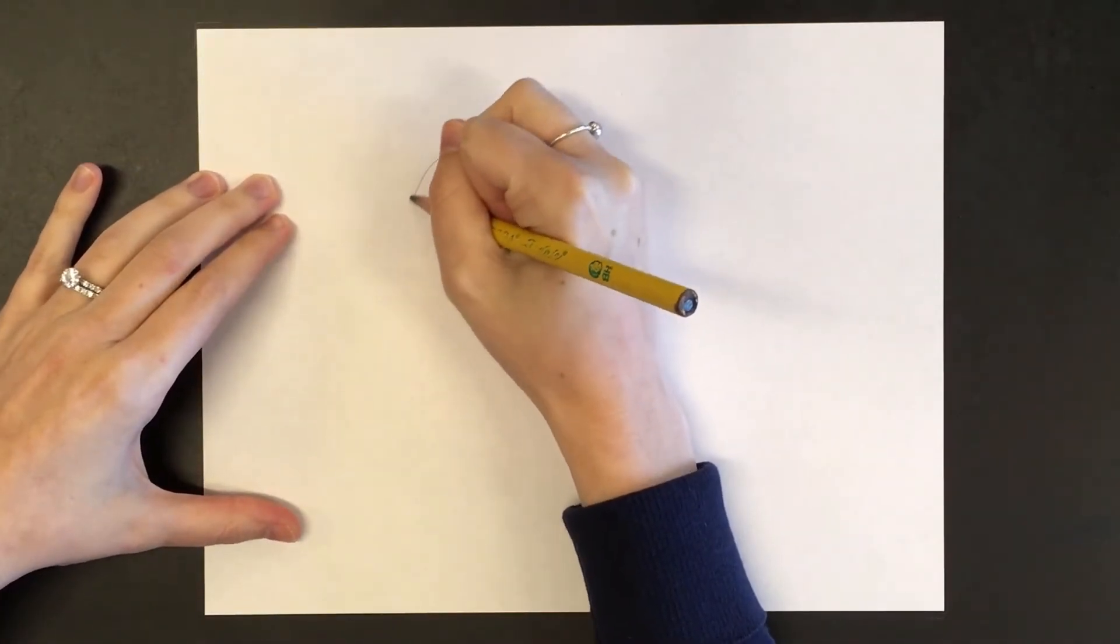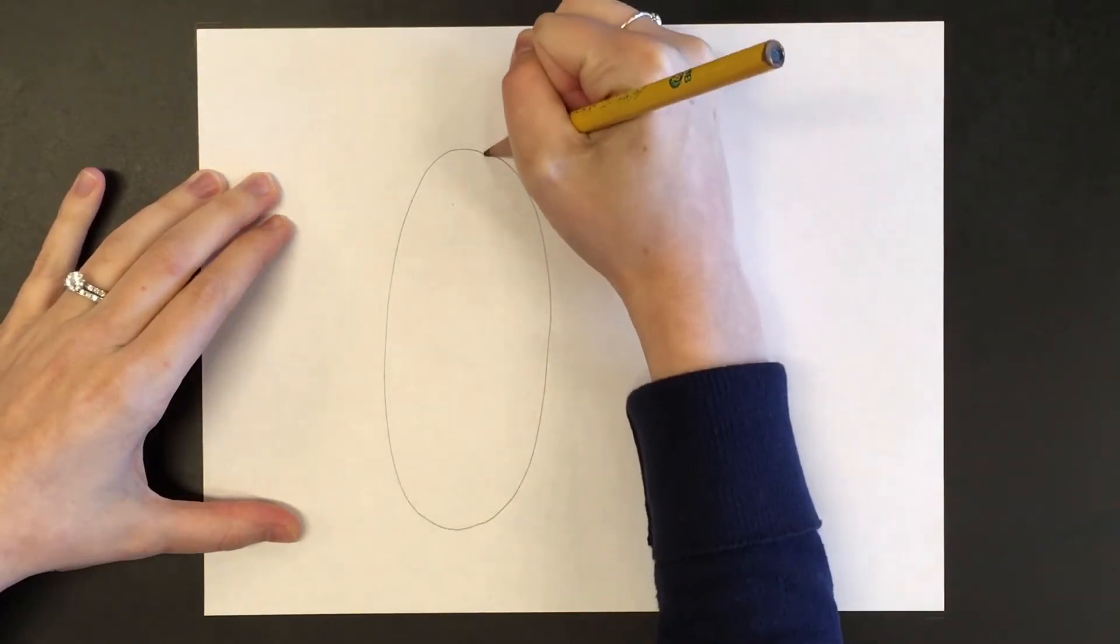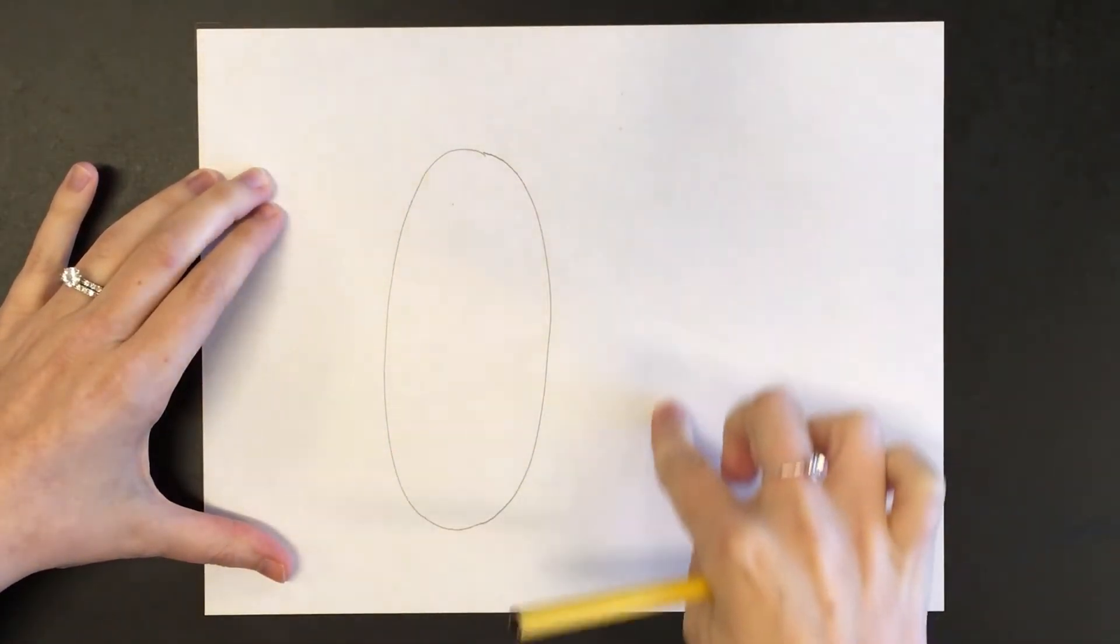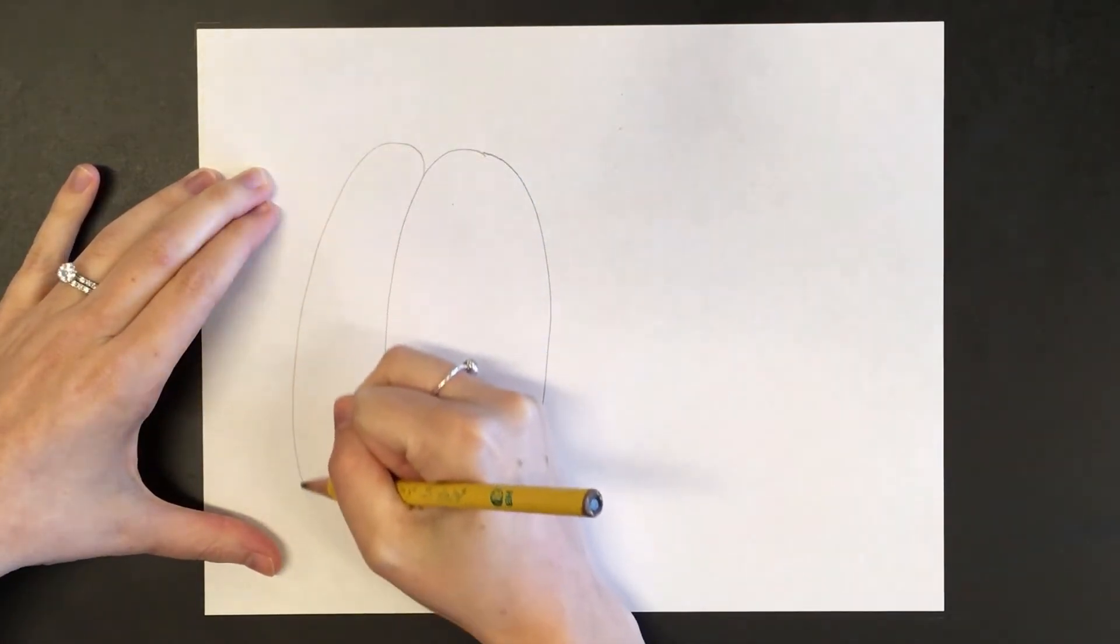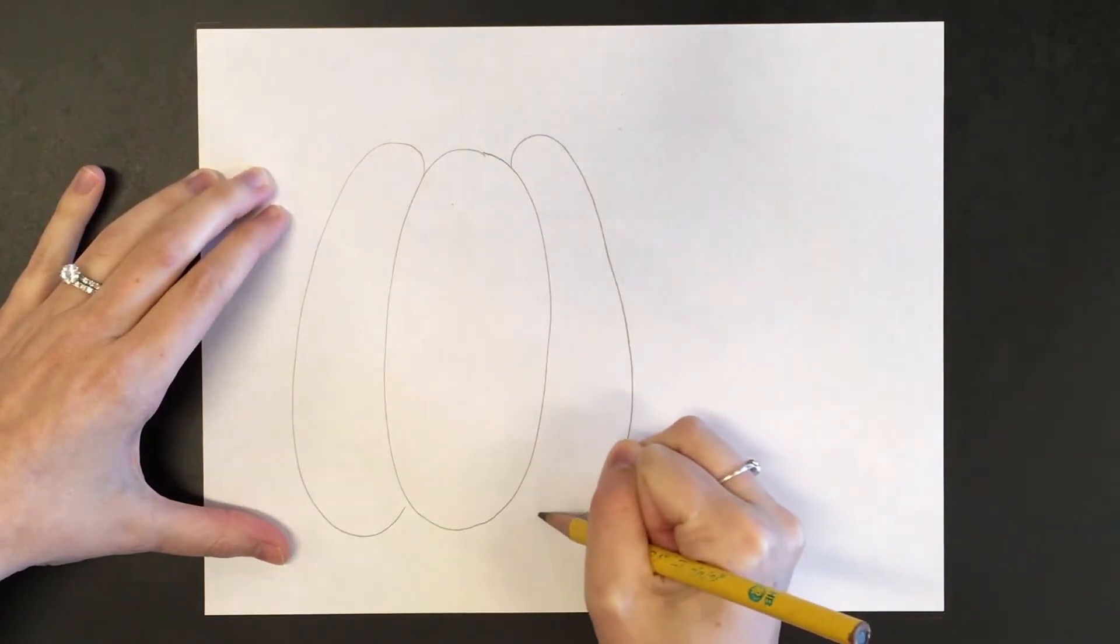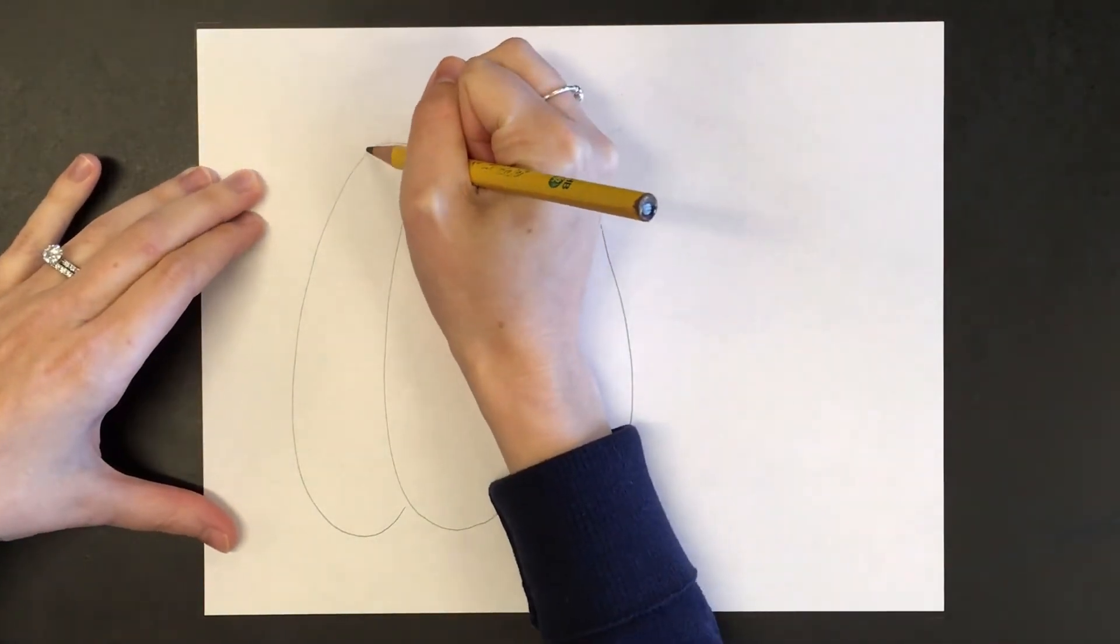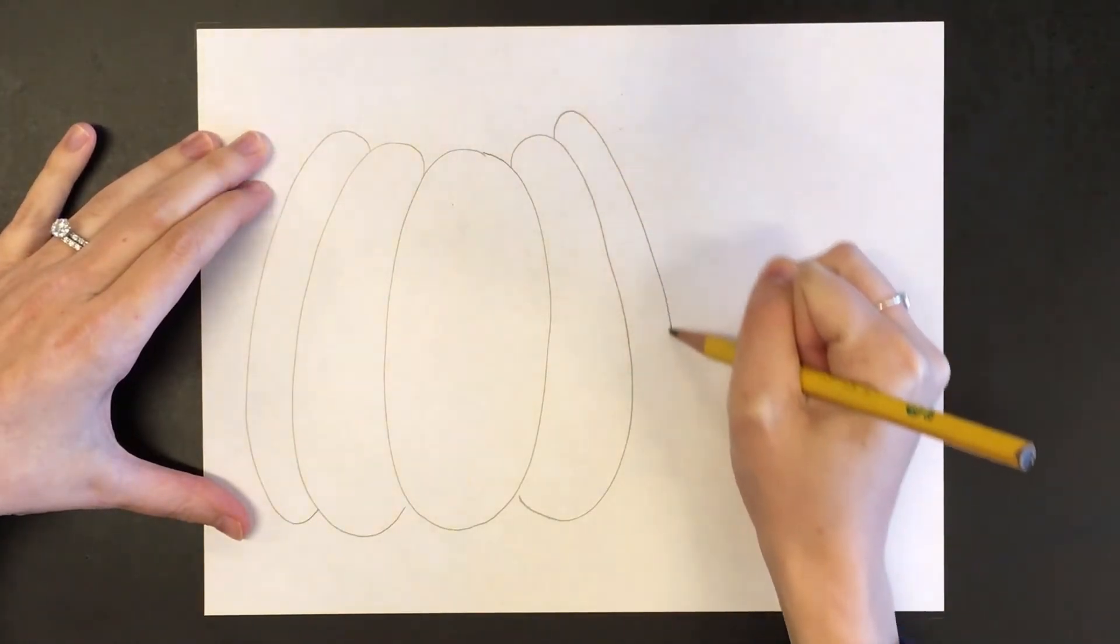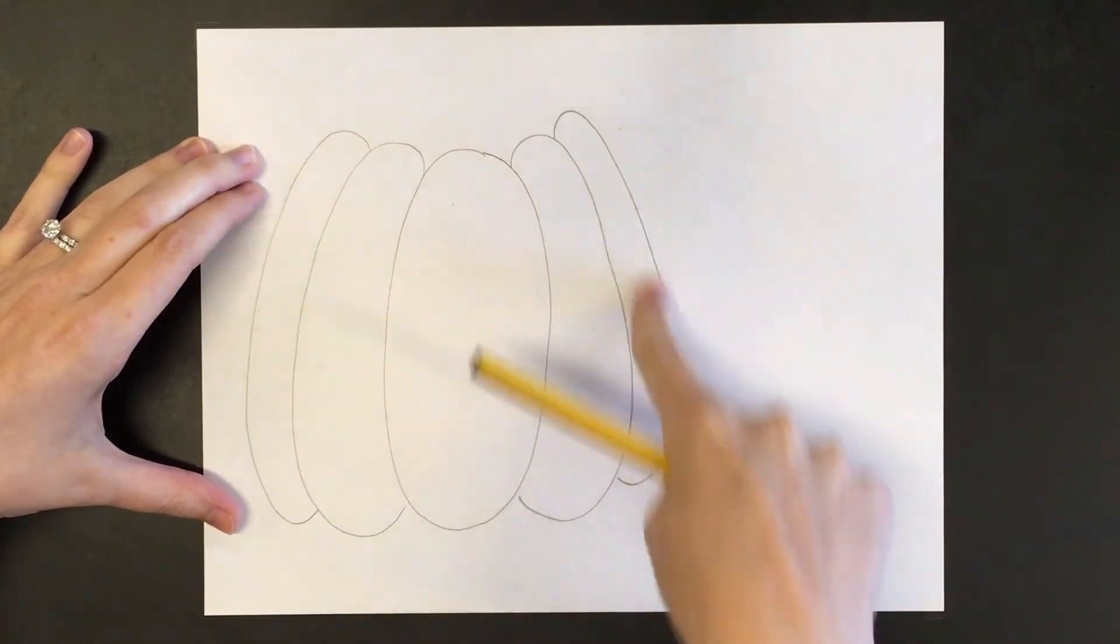To make a pumpkin I just make a nice big long oval, and then off of that oval I'm going to be making curves on either side like this. And remember it's always important to draw in pencil first. That way if you make a mistake you can always go back and erase. I think I'm gonna make my pumpkin really big so I'm gonna do one more row of curves. If you notice, they get a little bit smaller as I get towards the edge.